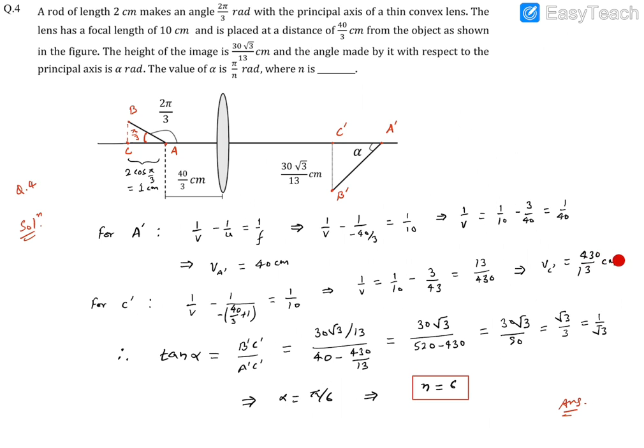After simplification, v_C' turns out to be 430/13 centimeters. Now since we know the location of A' and C', the difference between these two is A'C'.